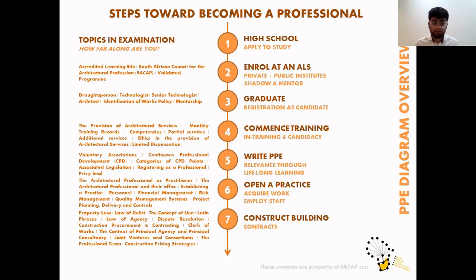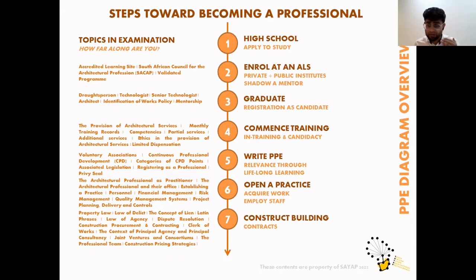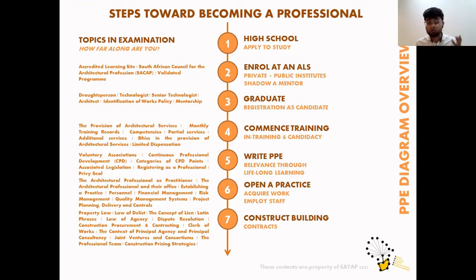Looking at stage five — writing the PPE exam — SACAP uses the concept of 'relevance through lifelong learning.' Once you are a professional you don't necessarily need to keep training in a formal educational sense, but to stay relevant there are mechanisms in place. Voluntary associations provide information through Continuous Professional Development courses — CPD courses. There are three different categories of CPD points: category one, two, and three — individual, development, and work-based. You also need to understand the associated legislation and the legal frameworks around this.